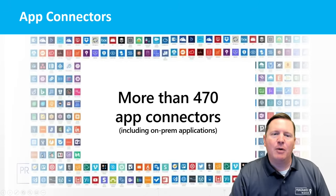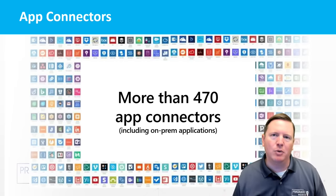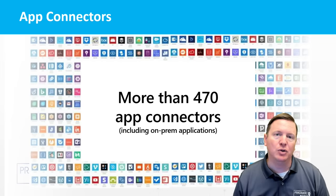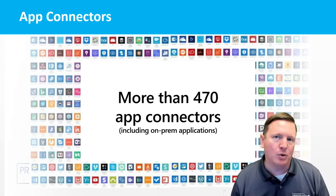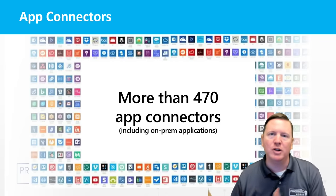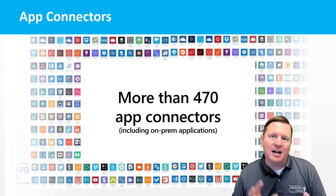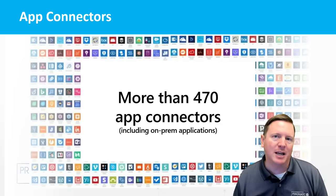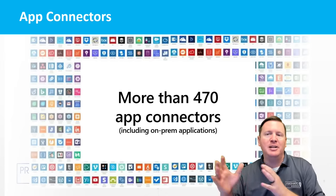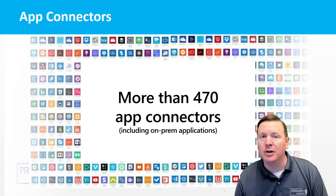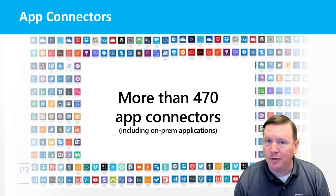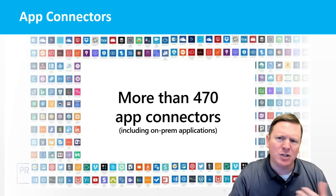Within Power Automate, there are more than 470 different connectors available — both to on-premises and cloud data sources. Whether you're working with Salesforce, Dynamics, OneDrive, or Outlook.com, you can tie in information from those sources. If a connector you need isn't available, you can even build your own custom connectors and share them with others. There's a connector library where you can find custom connectors that others have created.